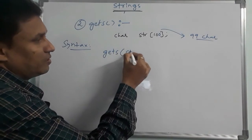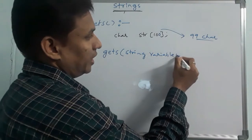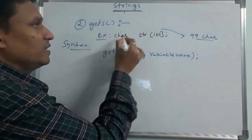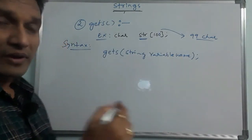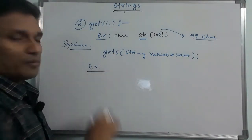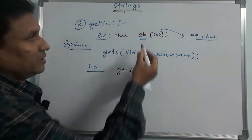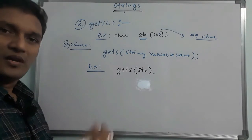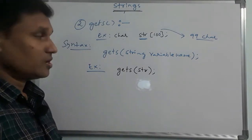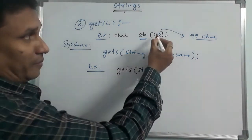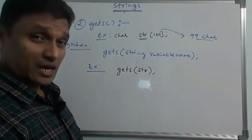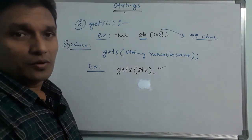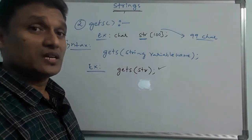The gets() syntax is: gets(string_variable_name). For example: char str[100]; gets(str). This allows entering up to 99 characters with spaces. The last character null is stored automatically. So gets() reads a full line, whereas scanf reads only a single word.